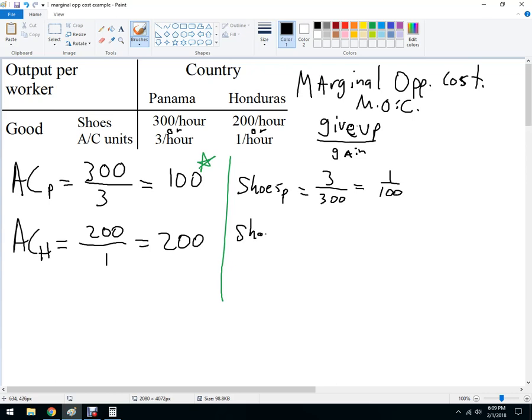And then shoes in Honduras is one. They give up one AC unit over 200, which is just one over 200. And so the lower opportunity cost, the lower number here is Honduras.